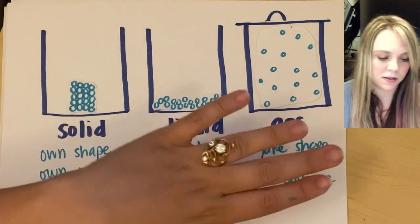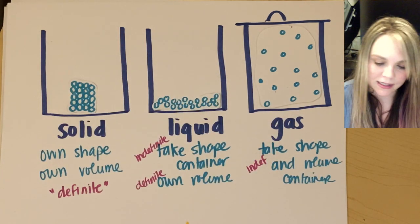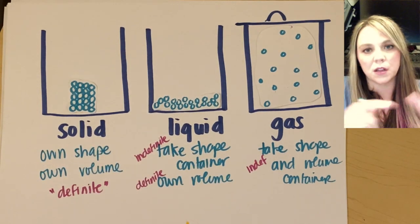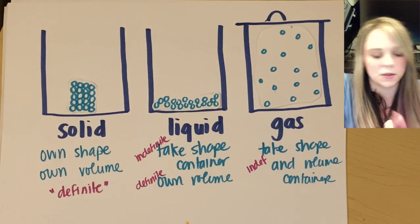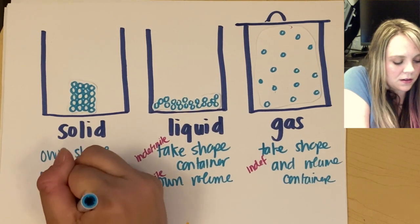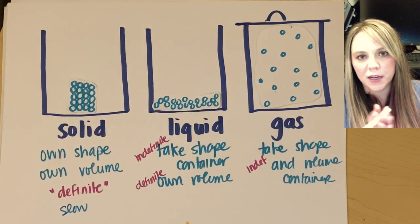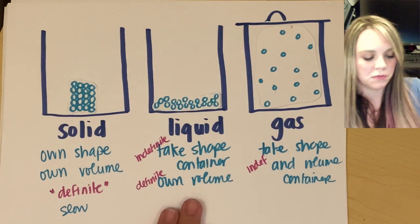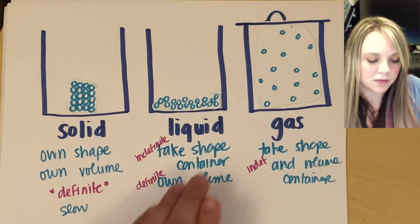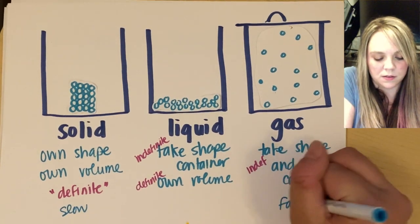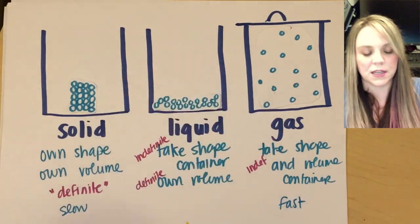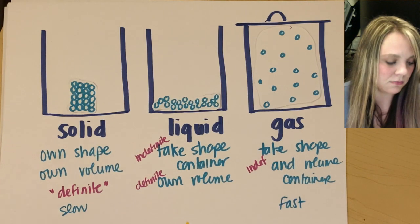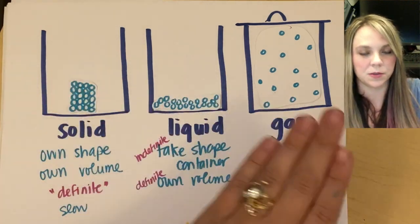Other things about these three is that, all right, solids, the actual solid particles move very slowly. They are slowly moving particles. They like vibrate next to each other. They still move. But they're moving very slowly. Liquid moves slightly faster and a gas moves fast, right? These gas particles are like zinging around everywhere.